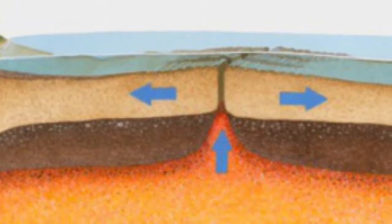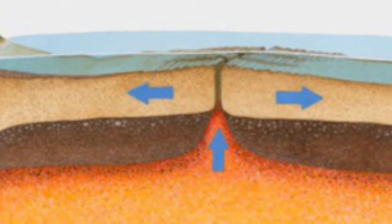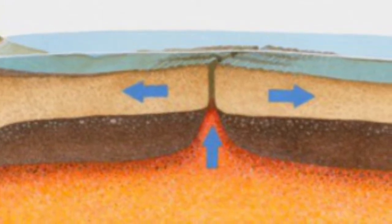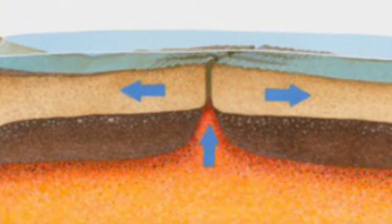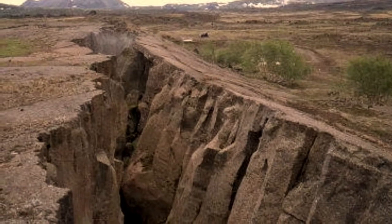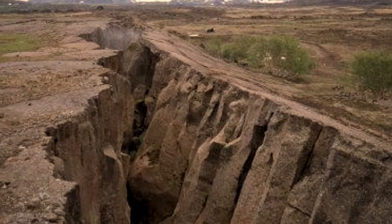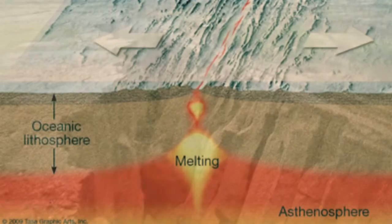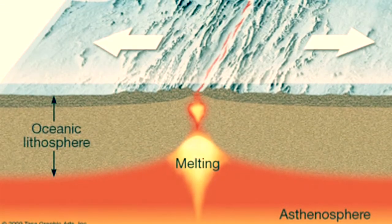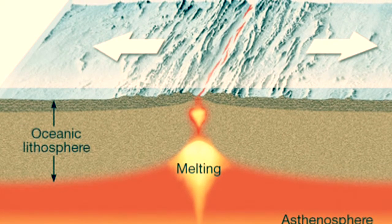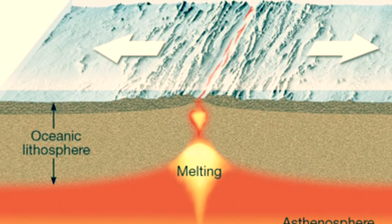A divergent boundary, or a divergent plate boundary, is a linear feature that exists between two tectonic plates that are moving away from each other. The plate separation is very slow. Divergent boundaries can appear on land, however most appear on the seafloor.